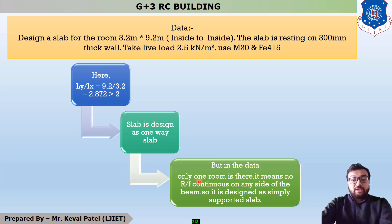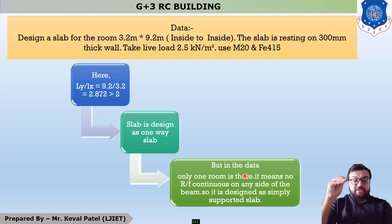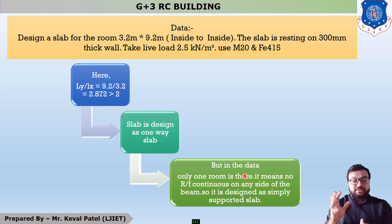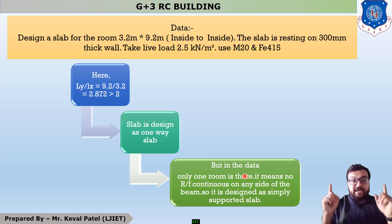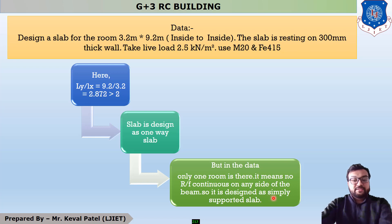In the data, only one room is given, meaning no reinforcement is continuous to another slab. Whenever there is specification for only one room with no indication of reinforcement moving to another slab, the slab is classified as simply supported. Whenever reinforcement goes to another slab, it is a continuous slab. Since reinforcement ends at all four sides here, it is a one-way simply supported slab.